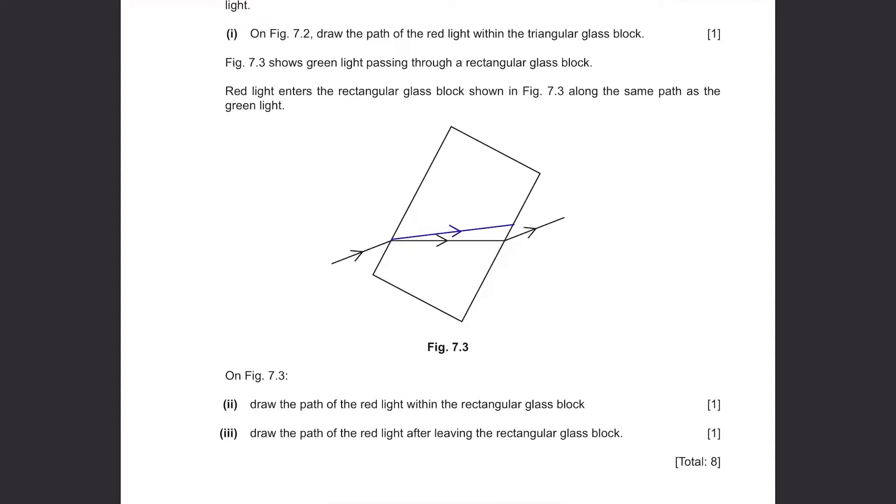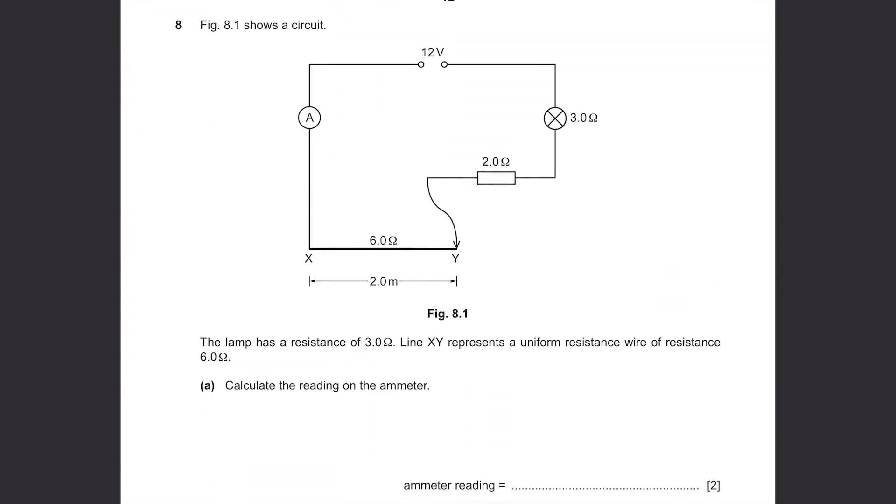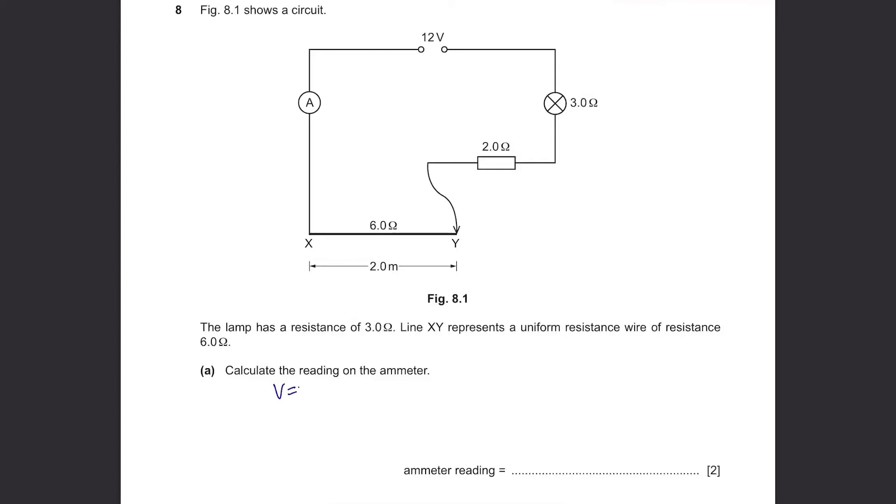Draw the path of the red light after leaving the rectangular glass block. When it leaves the block, it's gonna be parallel to the incident ray. Question 8. Figure 8.1 shows a circuit. The lamp has a resistance of 3 ohms. Line XY represents a uniform resistance wire of resistance 6 ohms. Part A. Calculate the reading on the amp meter. To find the reading on the amp meter, we use the formula I equals V over R. The voltage is 12 volts and we need to find the resistance. The resistance in a series circuit, you just add all of them together. So the total resistance is 6 plus 2 plus 3 equals 11. Then V over R, 12 divided by 11, it's 1.1 ampere.